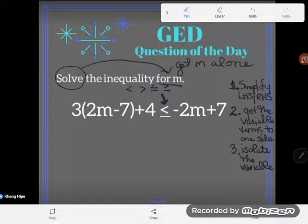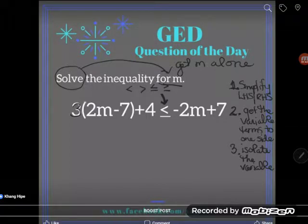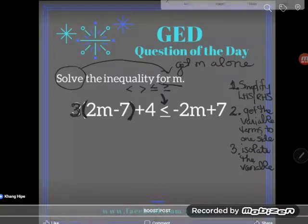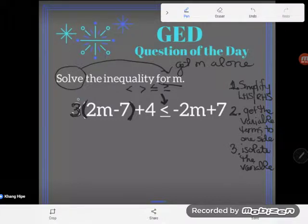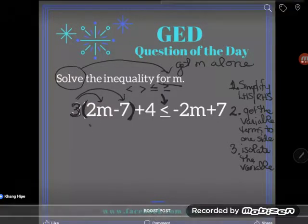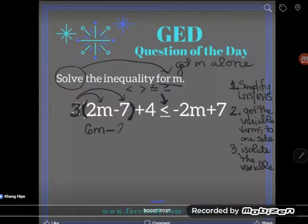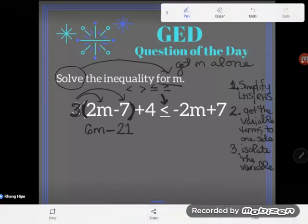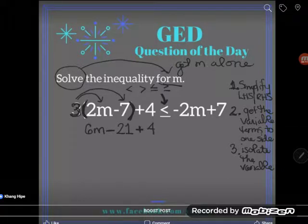We're going to simplify the left-hand side. I see some work I know how to do. I see this 3 shoved up against this parentheses. That's a sign that this 3 is multiplying with all the numbers in this parentheses. So I know how to multiply, even with algebraic expressions, even with letters involved. So I'm going to go ahead and do that. 3 times 2m is 6m, and 3 times negative 7 is negative 21. Now, notice my plus 4 is out of the parentheses, so my plus 4 is not going to get involved in that multiplication. I'm just going to drop it.